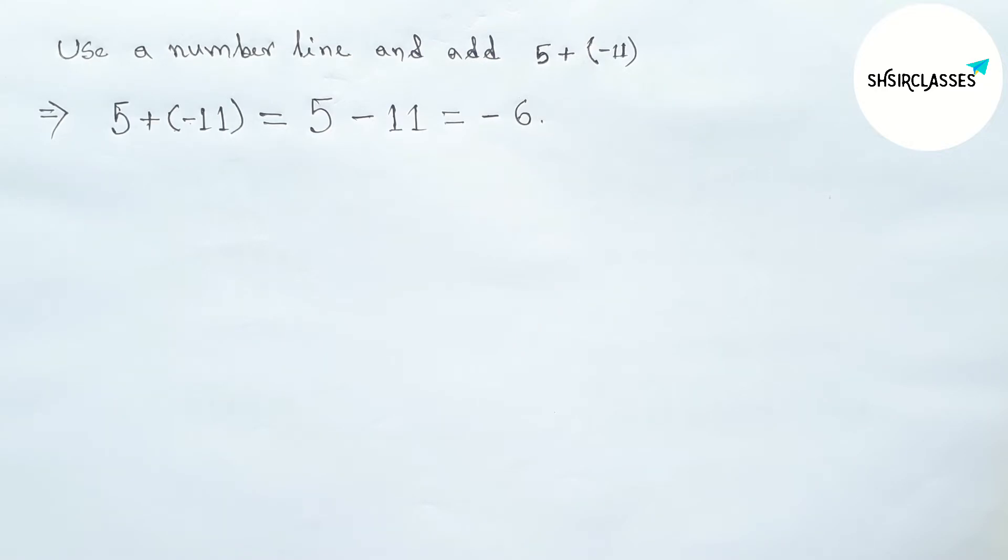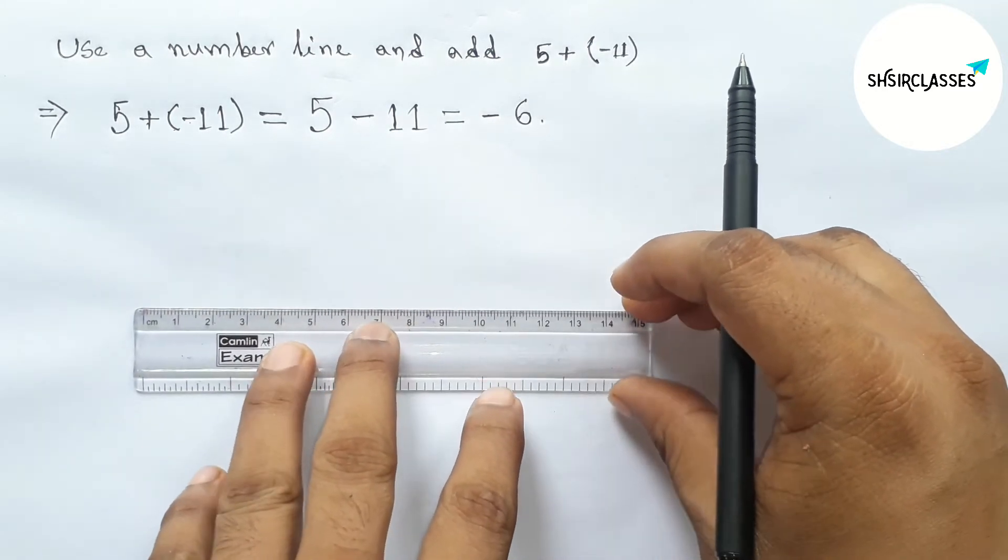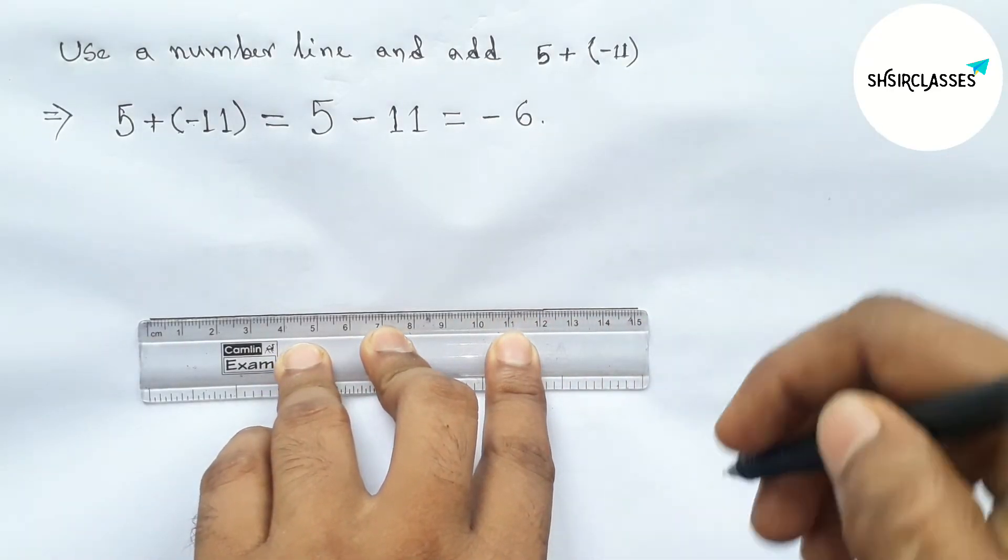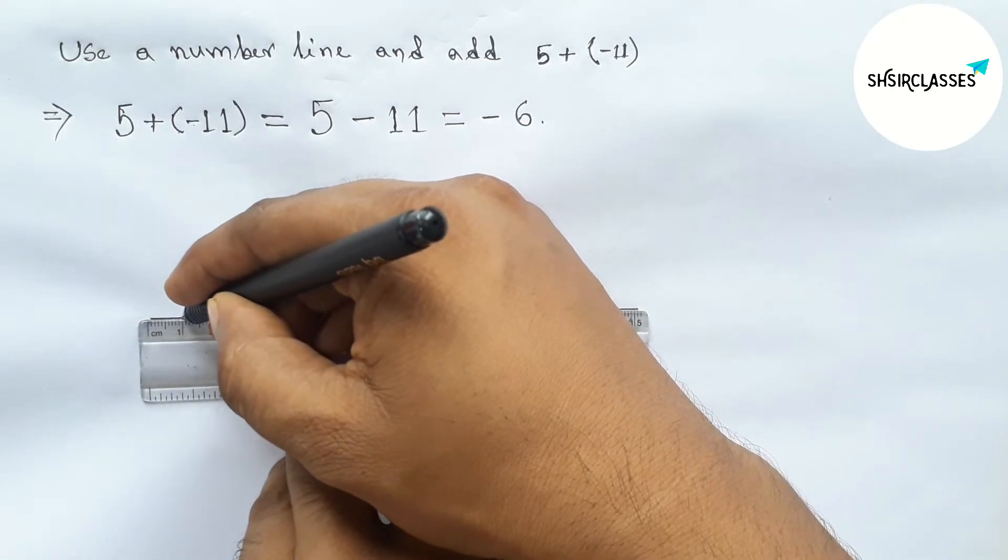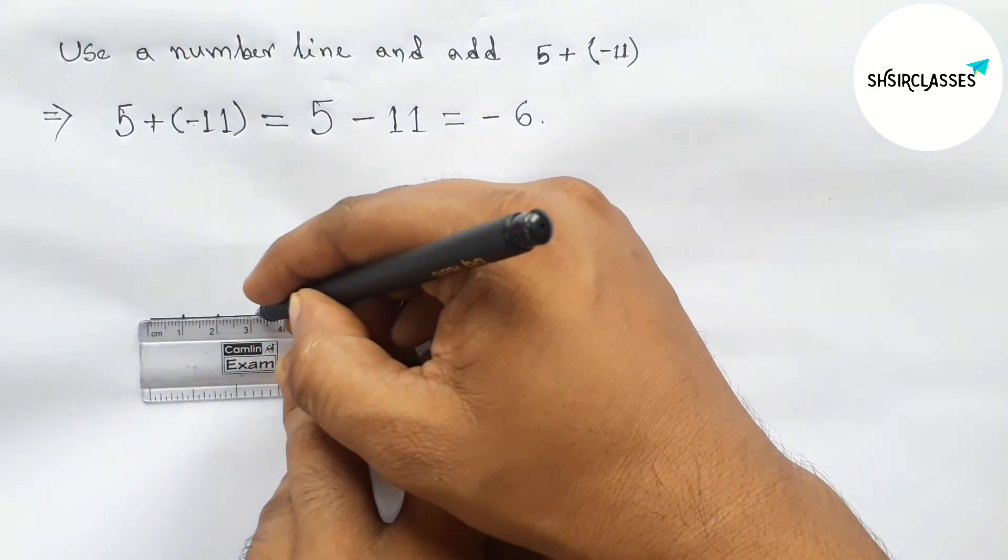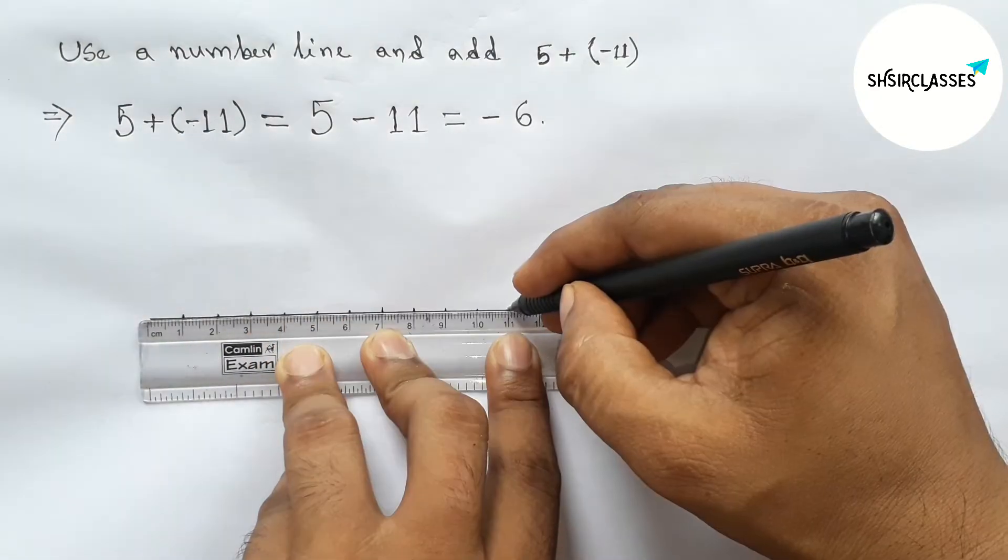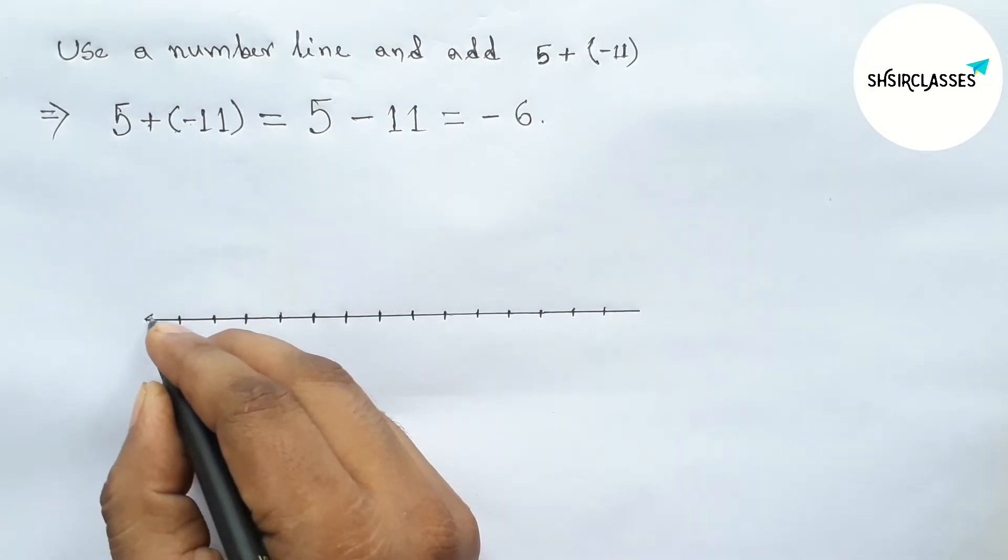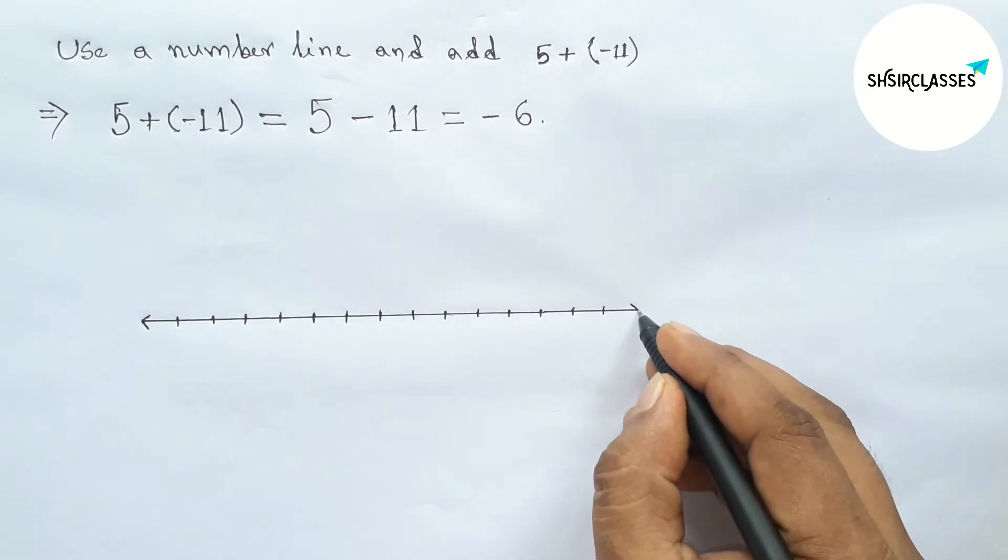Next, use a number line and add 5 plus minus 11. So first drawing here a line segment by this way and using scale. So first marking the numbers by this way. Now taking arrow mark on both side.